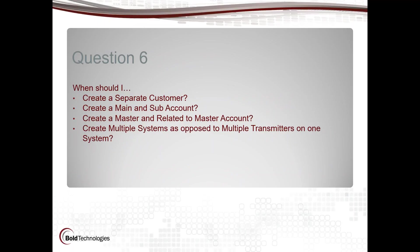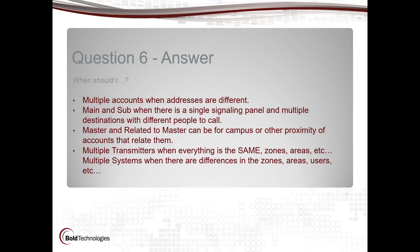Question number six: when should I create a separate customer, create a main and subaccount, create a master and related-to-master, or use multiple systems as opposed to multiple transmitters on one system? I've attached a customer record decision document to this meeting. If I'm creating multiple accounts, think of it as: if I have a different address and have to dispatch police to a different place, I need a different account. Main and subaccount is where you have a single signaling panel and multiple destinations where there may be different people to call, different businesses.